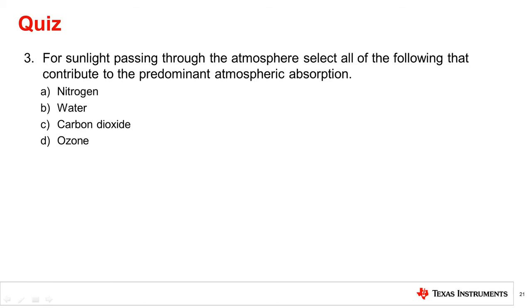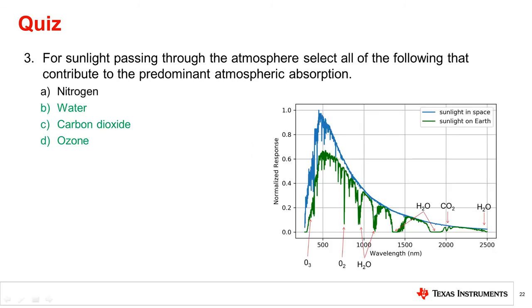Question 3: For sunlight passing through the atmosphere, select all of the following that contribute to the predominant atmospheric absorption. Of the options, water (H2O), carbon dioxide (CO2), and ozone (O3) all contribute predominantly to the atmospheric absorption, as can be seen in the plot.